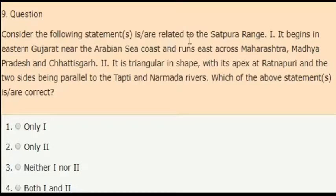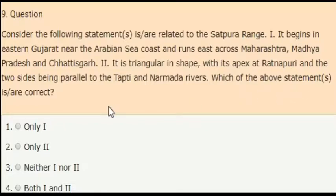Next question: consider the following statements related to the Satpura range. First statement: it begins in eastern Gujarat near the Arabian Sea coast and runs east across Maharashtra, Madhya Pradesh, and Chhattisgarh. Second statement: it is triangular in shape with its apex at Ratnapuri and two sides parallel to the Tapti and Narmada rivers. The correct answer is both statements one and two are correct.